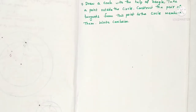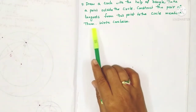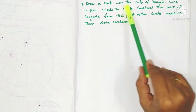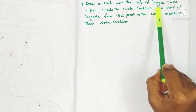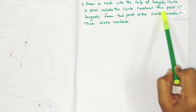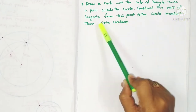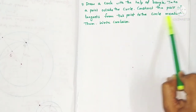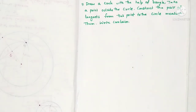Hello students, welcome to my channel. Today in this video we are going to see this construction: draw a circle with the help of a bangle, take a point outside the circle, construct the pair of tangents from this point to the circle, measure them, and write the conclusion.